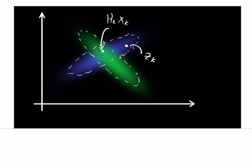So the green blob is the prior, the blue blob is the measurement, and we want to multiply them together to get the posterior. I want both the prediction as represented in the sensor space and the measurement zk to hold true. If you remember, we did exactly the same thing in the 1D Kalman filter, and since it is exactly the same as the multi-dimensional Kalman filter, let me recap the one-dimensional case.